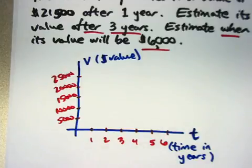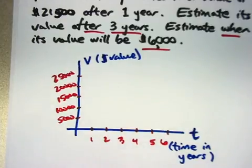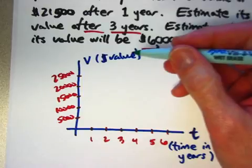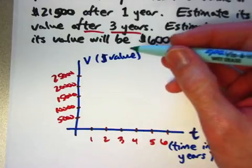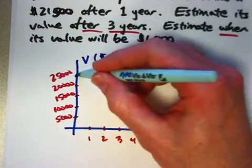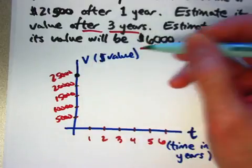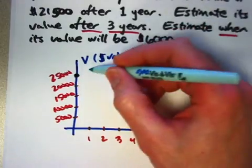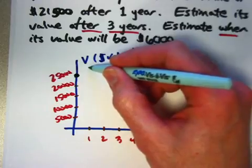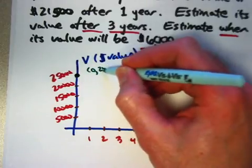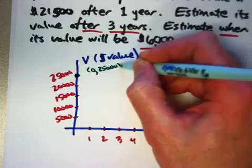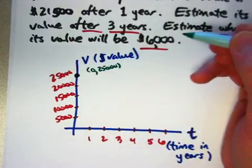I know that when I buy the car it's $25,000, so this point right here whose coordinates are zero, twenty-five thousand, and I'll write that like this, is a point that's going to be on the graph.